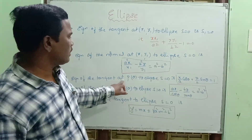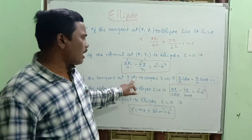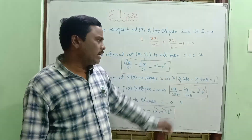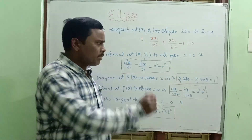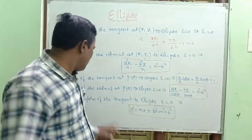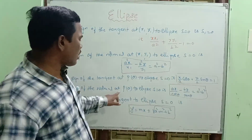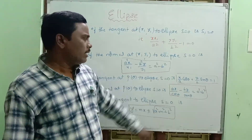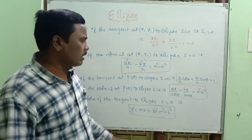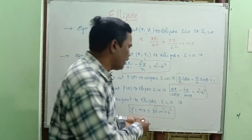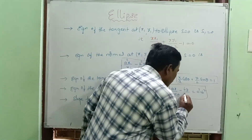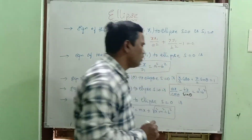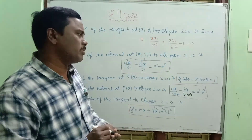Equation of the tangent at parametric point P(theta): x by a into cos theta plus y by b into sin theta equal to 1. Equation of the normal at parametric point: ax by cos theta minus by by sin theta equal to a square minus b square.